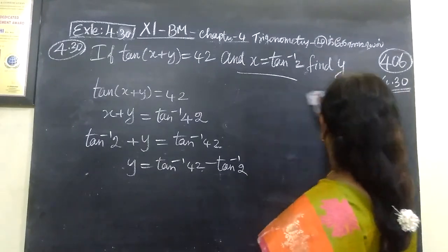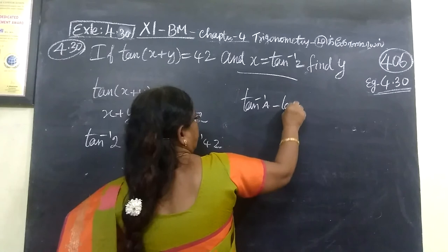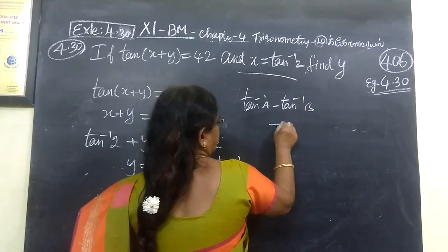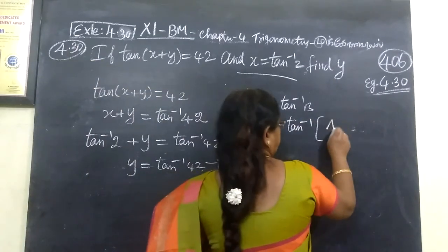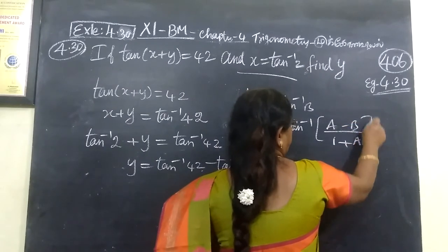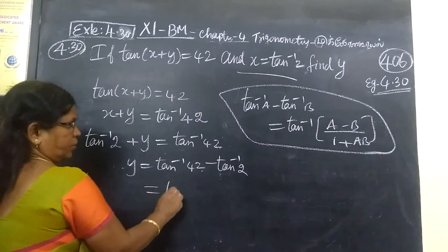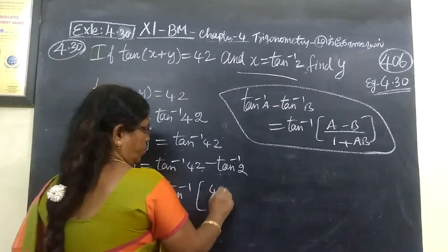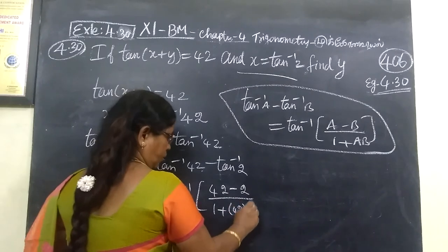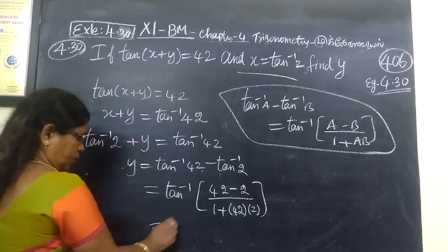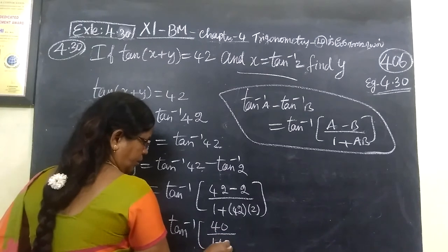Now using the formula tan⁻¹a − tan⁻¹b = tan⁻¹((a − b) / (1 + ab)). Substituting a = 42 and b = 2: y = tan⁻¹((42 − 2) / (1 + 42 × 2)) = tan⁻¹(40 / (1 + 84)) = tan⁻¹(40 / 85).